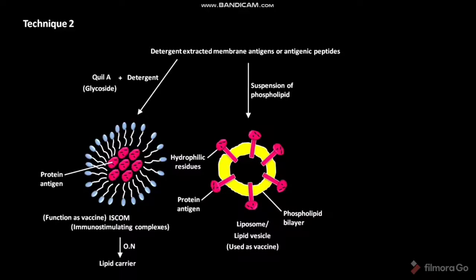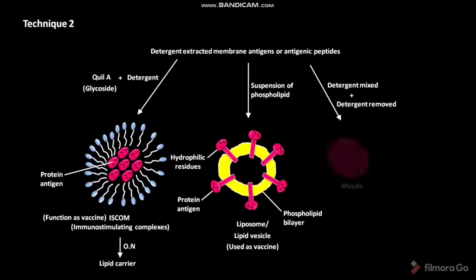The collected detergent extracted membrane antigens or antigenic peptides are first mixed with detergent, and then the detergent is removed, resulting in the formation of micelles. Every protein in the micelle orients itself with its hydrophilic residues towards the aqueous environment and the hydrophobic residues at the center. As a result, every protein in the micelle excludes its interaction with the aqueous environment. The micelles can also be used as vaccines.